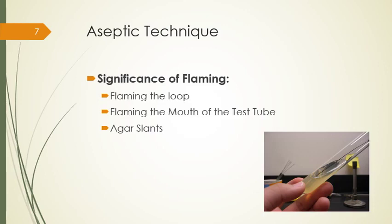Regarding the significance of flaming in aseptic technique — flaming the loop: holding the loop in the flame of the Bunsen burner kills all contaminating organisms. Sterilize the loop until it glows red hot for a few seconds. After flaming, make sure to slightly cool the loop before picking up organisms from the inoculum culture which is to be transferred.